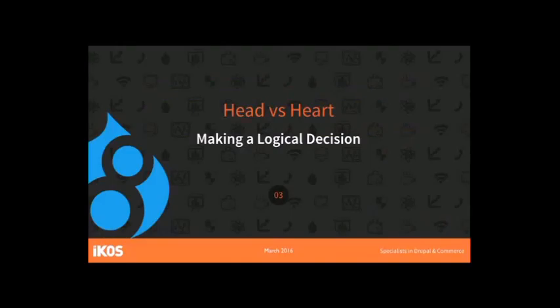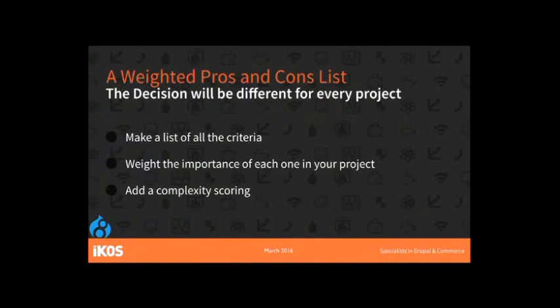It's head versus heart — make the logical decision. What I advise you do is use the materials in this presentation to create a pros and cons list, just like you would for any big life decision. Make a list of those criteria and look at how important each one is to you. Then potentially add a complexity scoring if you want to go really detailed and do it on a spreadsheet.